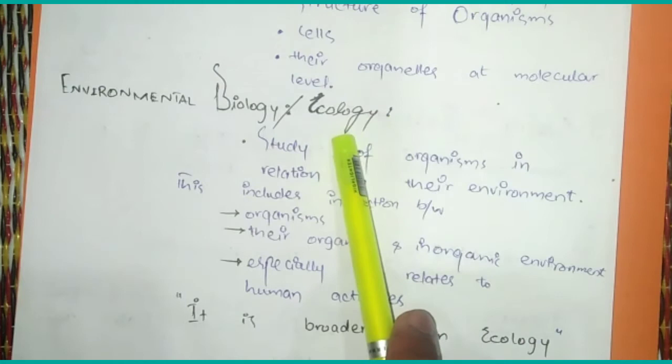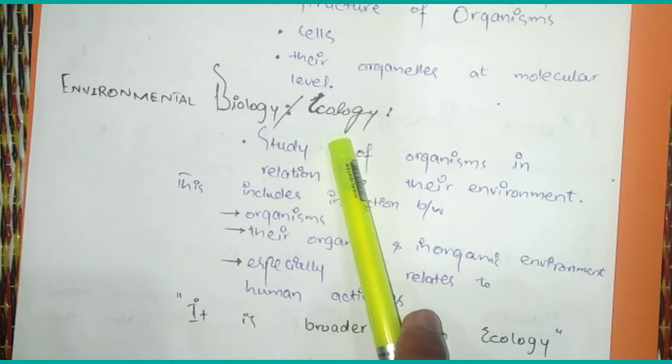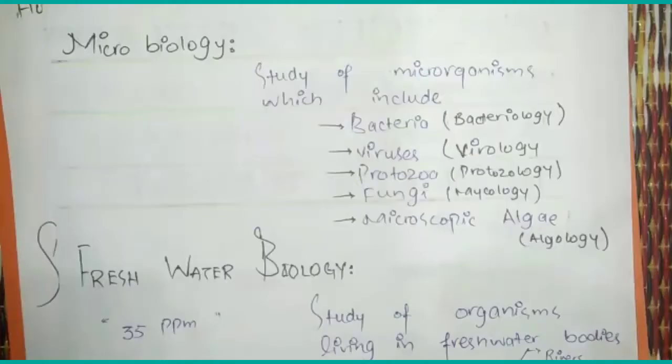Environmental biology is also called ecology. Ecology is a more specific and shorter term, but environmental biology is a broader term. Environmental biology is a broader category than ecology because ecology is included within environmental biology.